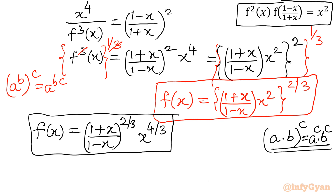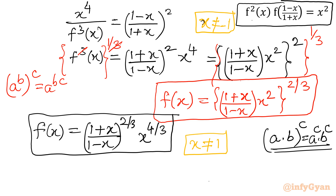In the original problem, x equal to minus 1 was not in the domain. Once you change the functional variable, the domain also changes. Now x not equal to 1 is the restriction. Domain means the values for which the function is not defined or cannot satisfy the equation. I hope you liked this video. Thank you so much for watching, and always remember the function (1 minus x)/(1 plus x) — it is very important. Bye bye for now; we will meet in the next video. Do not forget to like, share, and subscribe.